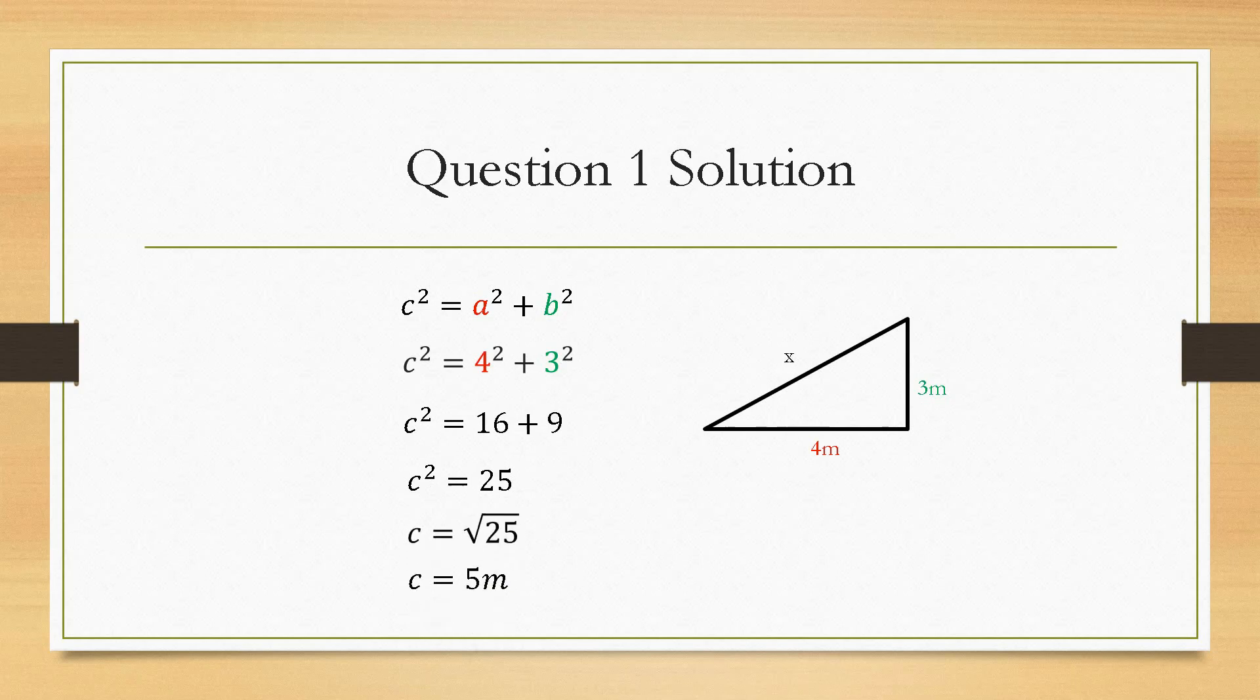Which will give us a value of c to be 5 metres and we need to remember the metres in there. And this triangle is a special triangle as it's also known as a 3, 4, 5 triangle.